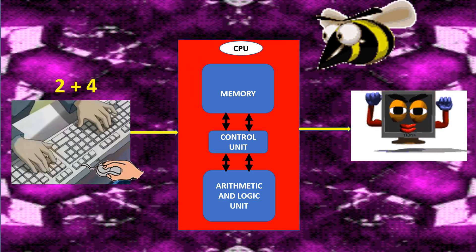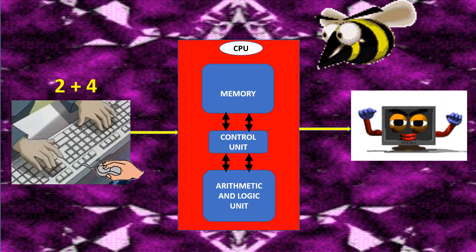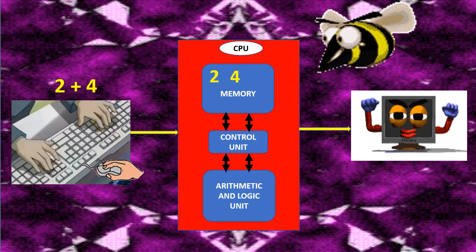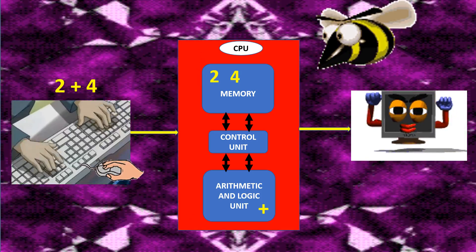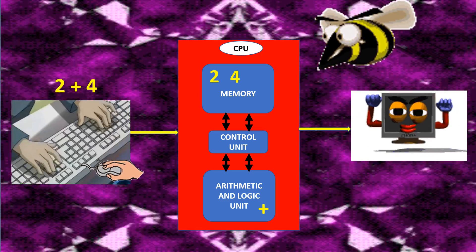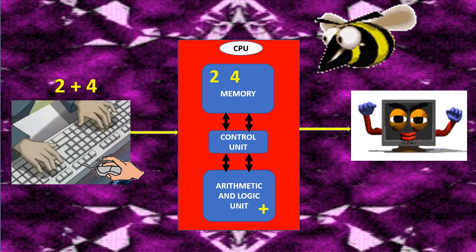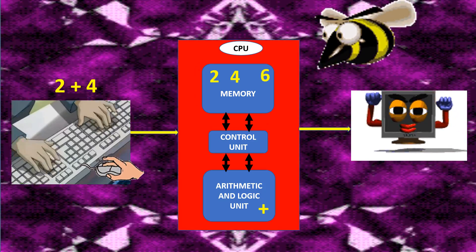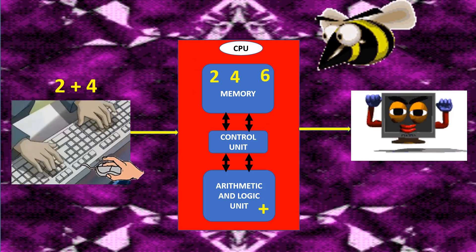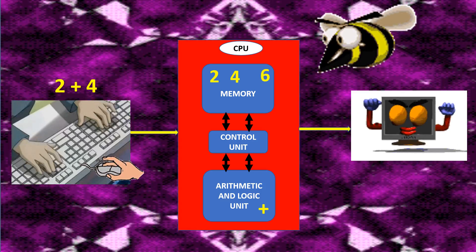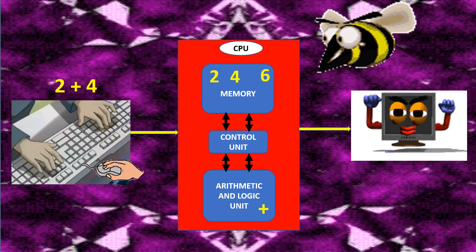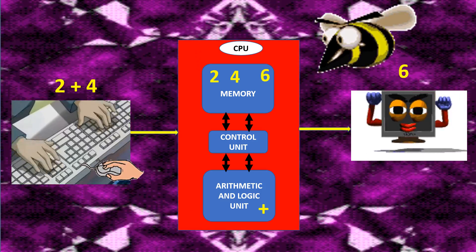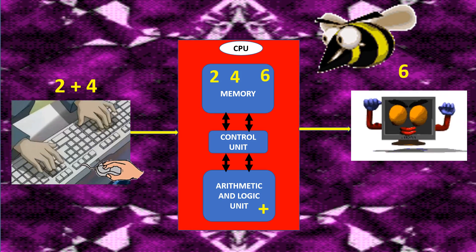The numbers two and four are stored in the computer memory. The Arithmetic and Logic Unit does the addition operation on these numbers. The answer six is also stored in the memory. The Control Unit controls the overall operations of the computer. The answer six is then sent from the memory to the output unit to be displayed in the monitor.